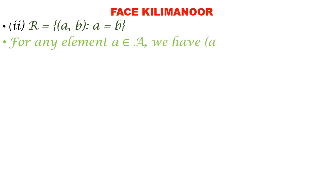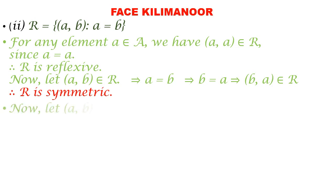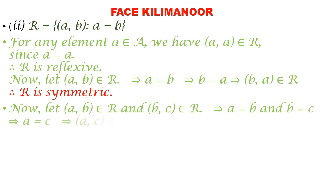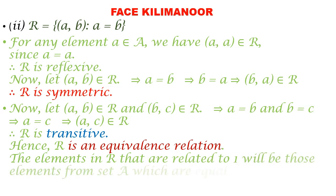For relation (ii), R = {(a,b) : a = b}. Since a = a, (a,a) belongs to R, so R is reflexive. If (a,b) belongs to R then a = b, which means b = a, so (b,a) belongs to R and R is symmetric. If a = b and b = c then a = c, so R is transitive. Therefore R is an equivalence relation.